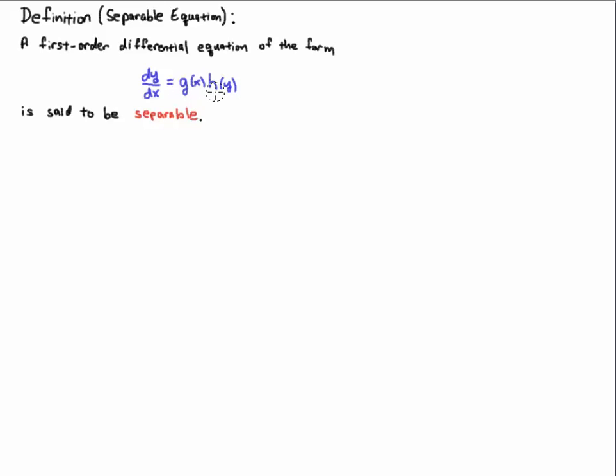And the other thing that you should take away from this definition is that one of the functions is written entirely in terms of the independent variable, in this case x, and the other function is written entirely in terms of the dependent variable, in this case y.